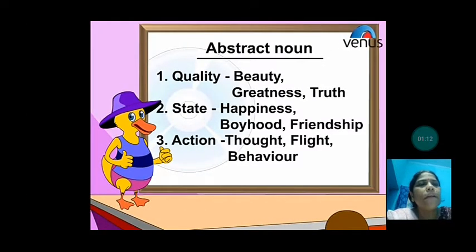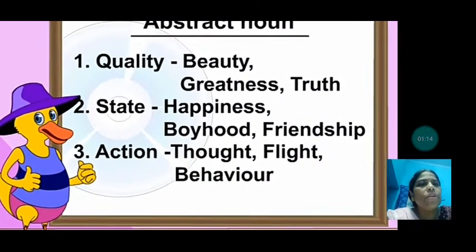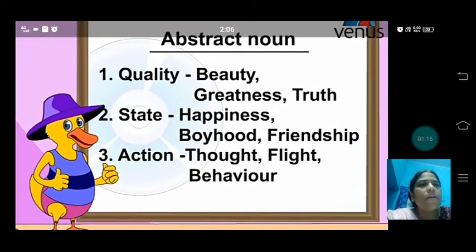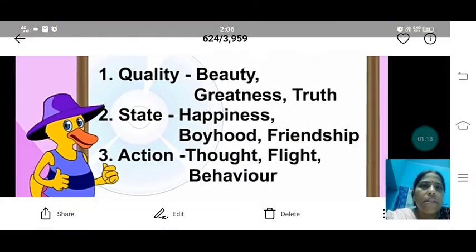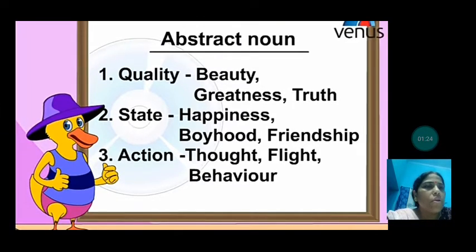Let us see one by one. Quality abstract nouns include: equality, beauty, greatness, truth. Then state — for example, happiness, how we are happy, then boyhood, friendship. Action abstract nouns include: thought, flight, behavior.